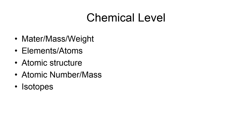In the human body, there are about 26 elements present. Elements are made up of the same kind of atoms. The four elements — carbon, hydrogen, oxygen, and nitrogen — make up about 95% of body weight of human beings. Thirteen elements make about 99% of body weight, meaning the other 13 elements are less than 1% of body weight.